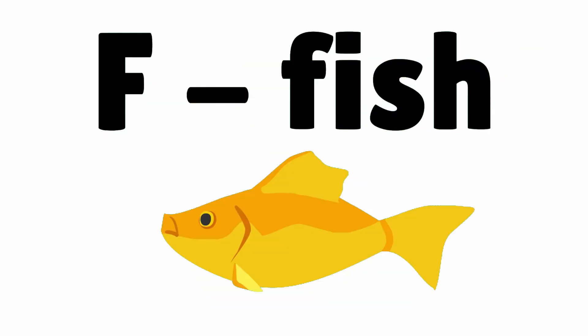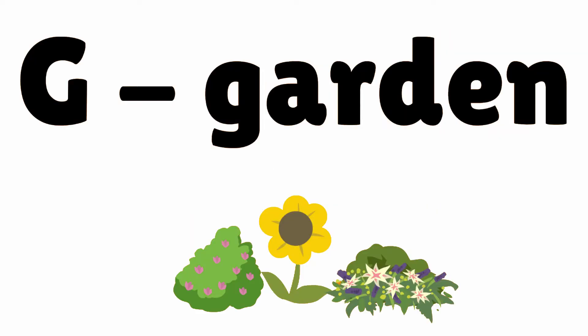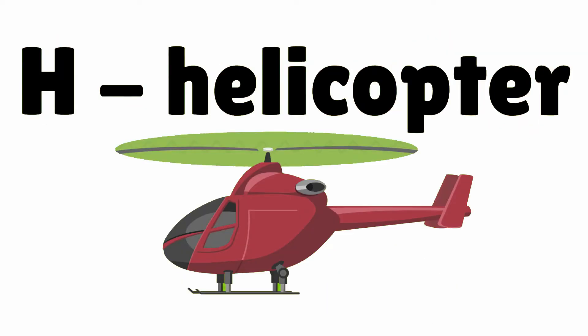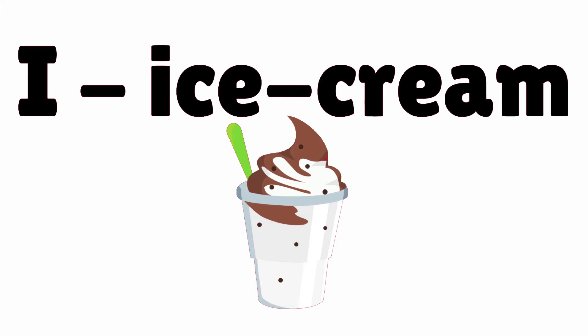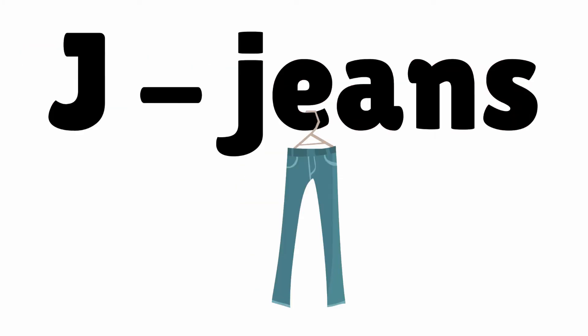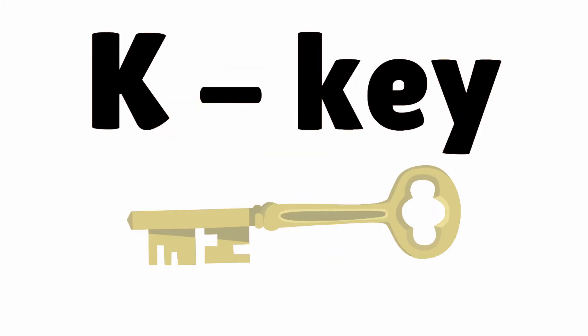F — Fish. G — Garden. H — Helicopter. I — Ice Cream. J — Jeans.